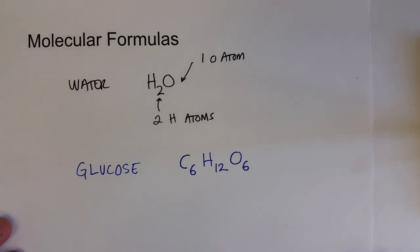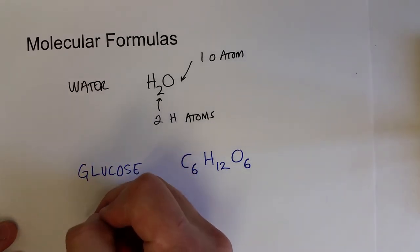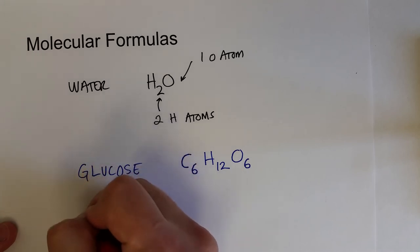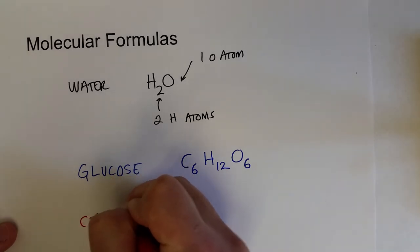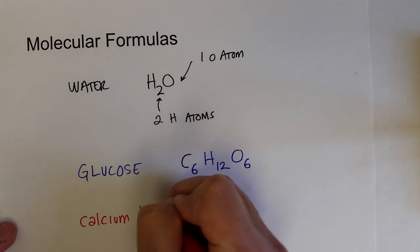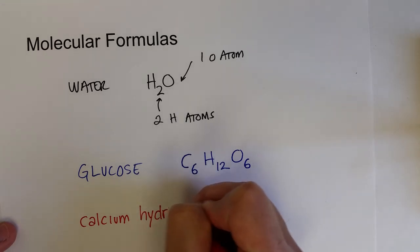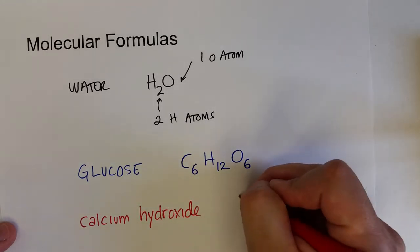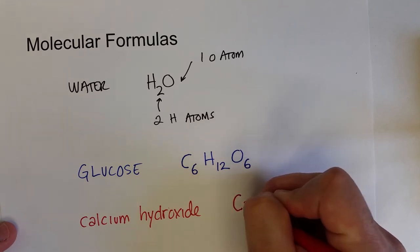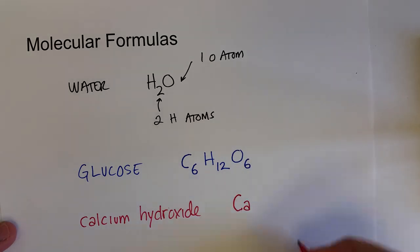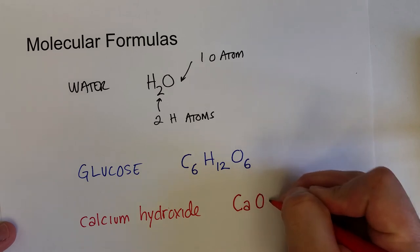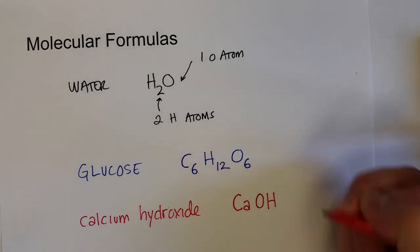Now, eventually, when we start talking about polyatomic ions, you'll notice that we will need to use parentheses. So a very common base or one type of base would be calcium hydroxide. Calcium hydroxide is the calcium ion and two hydroxide ions, which are polyatomic ions.